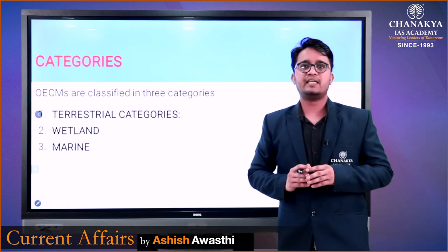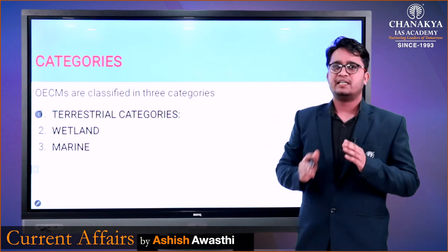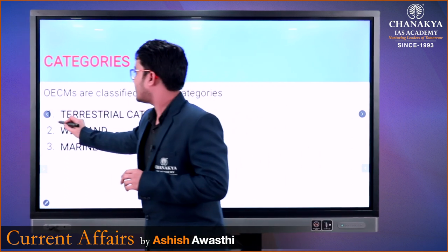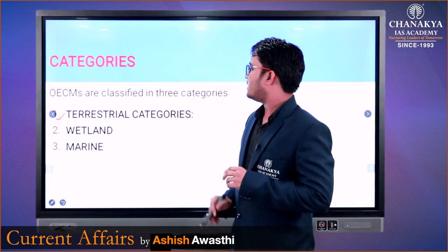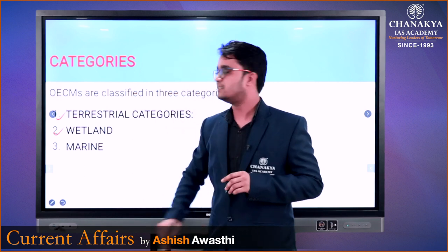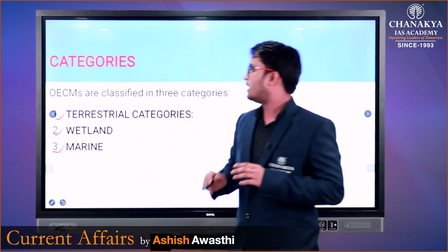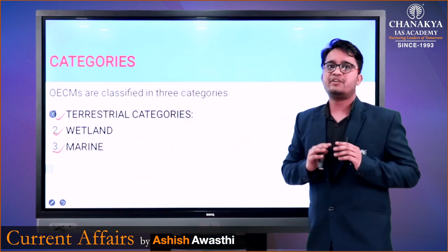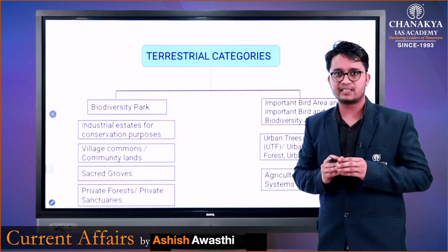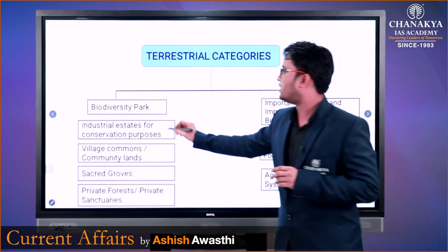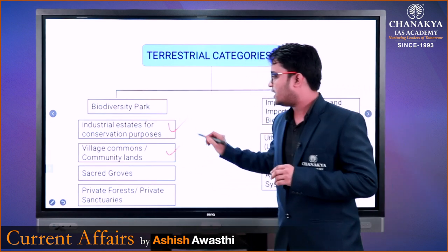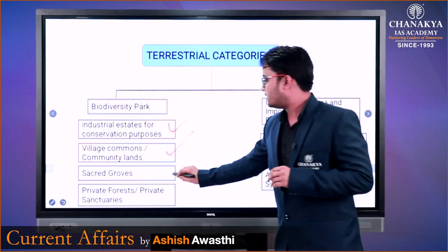अब जान लेते हैं कि OECM की Categories कितनी हैं। इसको broadly 3 Categories में divide किया गया है। First is Terrestrial Category, Second is Wetland, and Third is Marine। अगर हम Terrestrial को देखें, तो उसे further classify किया गया है। उसमें Biodiversity Park, Industrial Estate, Village Commons, Community Lands, Sacred Groves आते हैं।